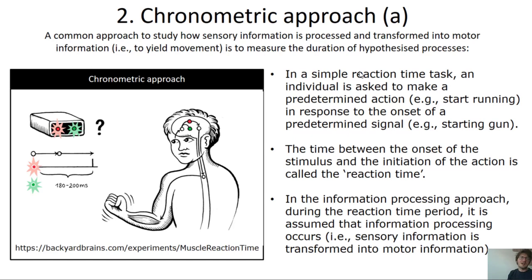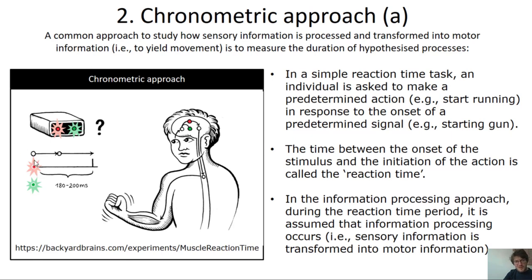The first and most simple task is called the simple reaction time task. In this task, we have an action that we know we're going to perform in response to a stimulus, and we try to perform it as quickly as possible. In the example shown, a participant flexes their forearms in response to lights being turned on as quickly as possible. There will be a delay between the moment the lights turn on and just before the initiation of the movement — this is called the reaction time.